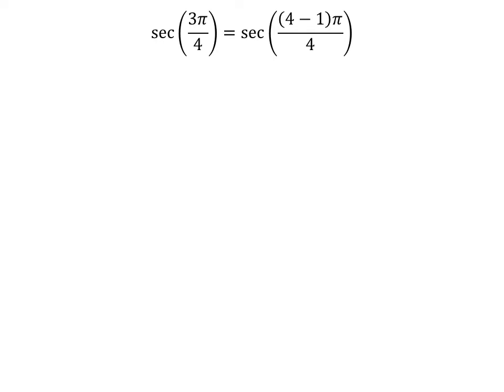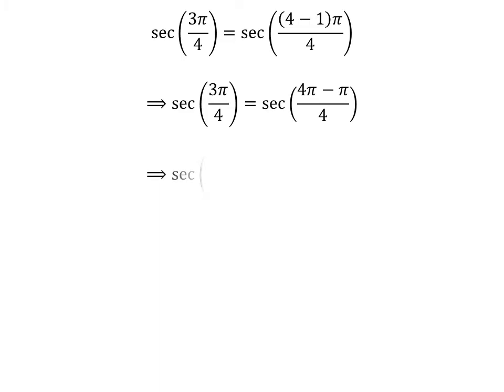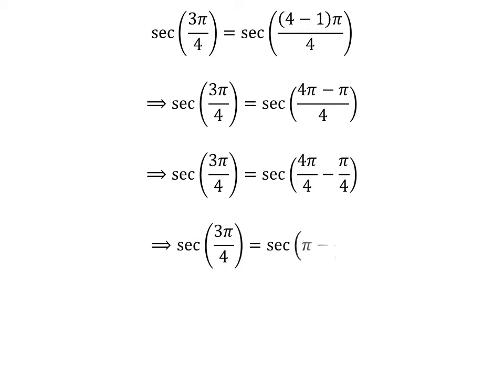Here is the first method. We know 4 minus 1 is equal to 3, so secant of 3π/4 is equal to secant of (4 minus 1) times π/4. Expanding the numerator, we get secant of (4π minus π)/4. The fraction 3π/4 can be expressed as the difference of two fractions 4π/4 and π/4. Cancelling the common factor gives us secant of 3π/4 is equal to secant of (π minus π/4).